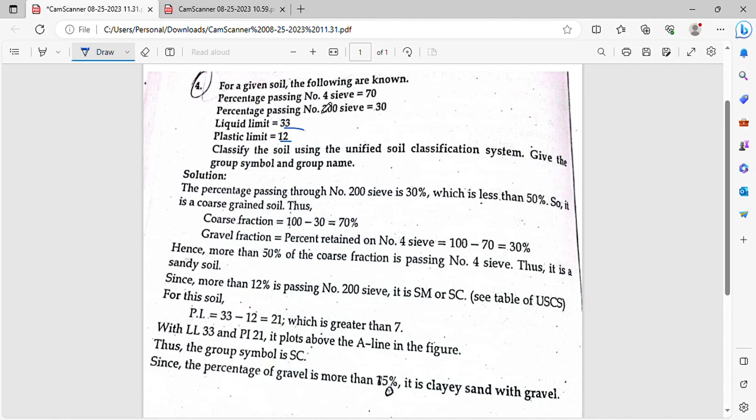Sieve number 4 is called 4.75 mm sieve, and sieve number 200 is called 75 micron or 0.075 mm sieve. The percentage passing through number 200 sieve is 30%, which is less than 50%.